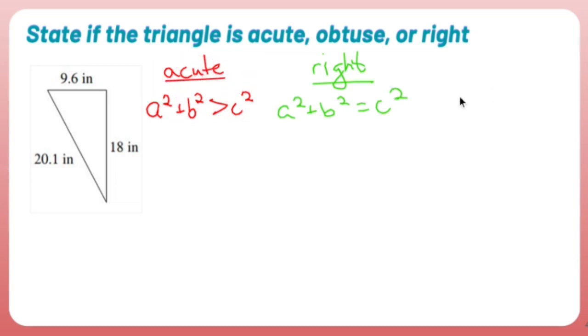Similarly, if I were to take the smaller sides and square them and add them together, and this sum is smaller than c squared, you have yourself an obtuse triangle.